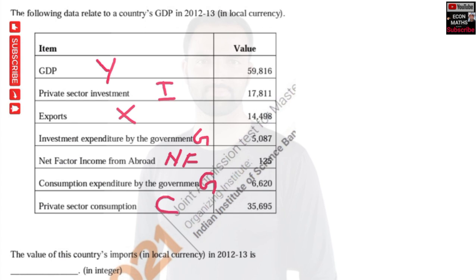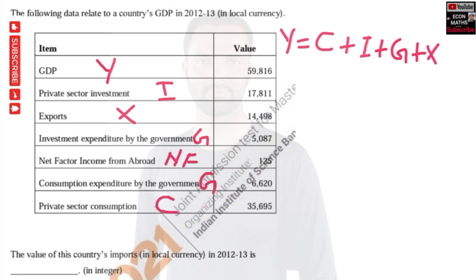Now, how do we calculate GDP using the expenditure method? The formula is simple. GDP, which I denote by Y, is equal to consumption expenditure plus investment expenditure plus government expenditure plus exports minus imports. This is our GDP equation or GDP identity.